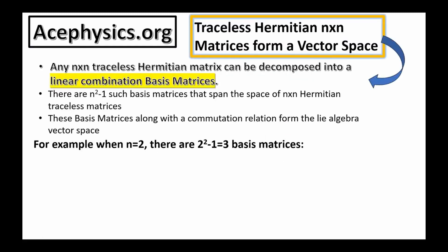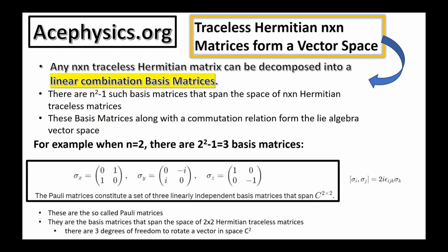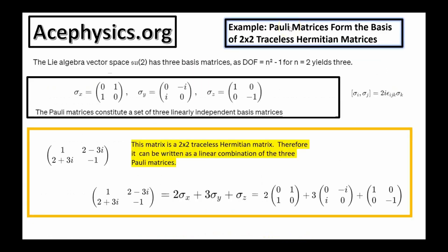Any n-by-n traceless Hermitian matrix can be decomposed into a linear combination of basis matrices. There are n²−1 such basis matrices that span the space of n-by-n Hermitian traceless matrices. These basis matrices, along with a commutation relation, form what is known as a Lie algebra, which is a vector space. When n equals 2, there are three basis matrices — the famous Pauli matrices — which span all 2-by-2 traceless Hermitian matrices.